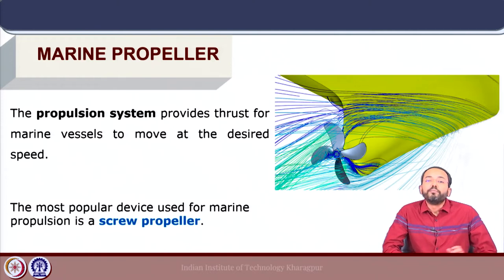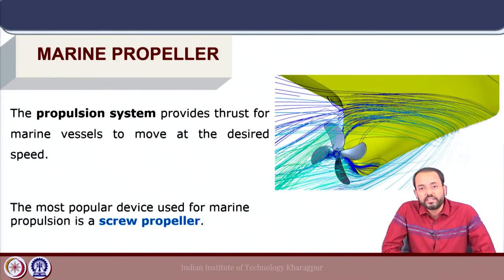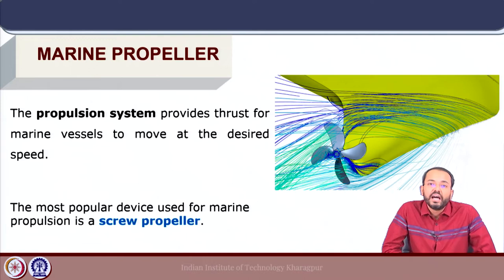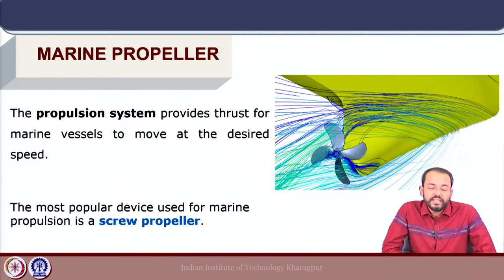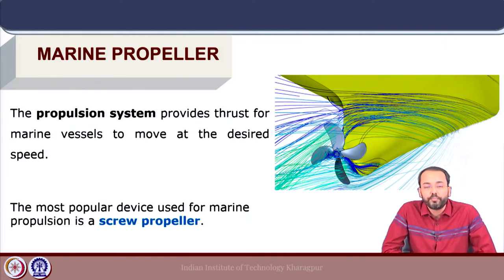The most popular device for Marine Propulsion is the screw propeller. Most ships all over the world use this as the main propulsion device, and different varieties of propellers depending on the exact application have been designed. There are also other propulsion devices. In this course, we will focus on the screw propeller, its hydrodynamics, and then move on to other aspects of propulsion and other propulsion devices.